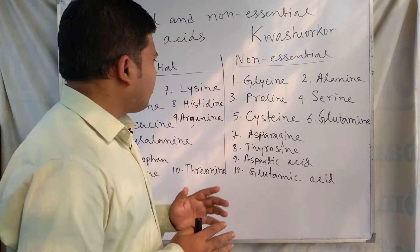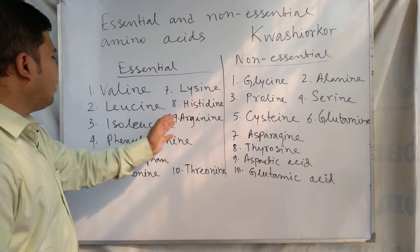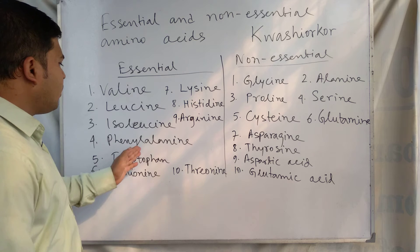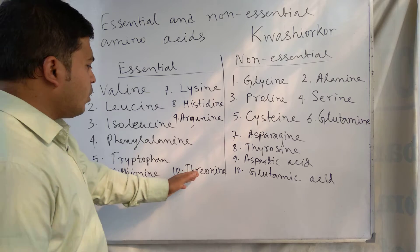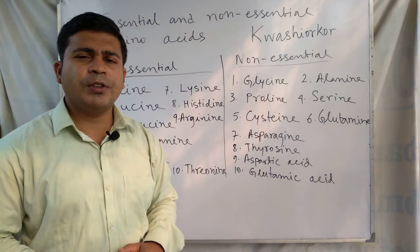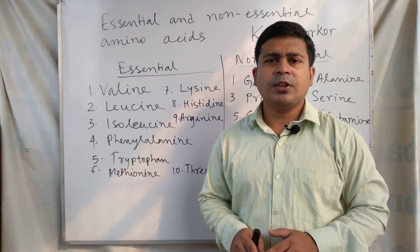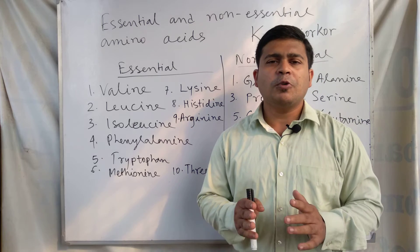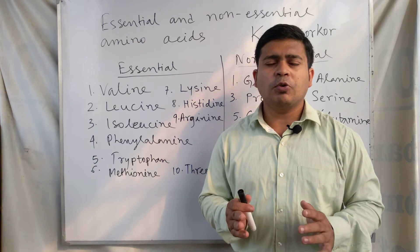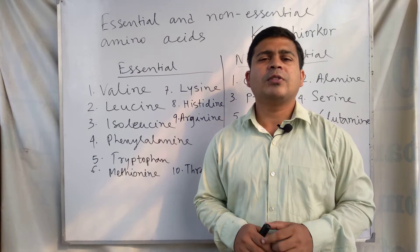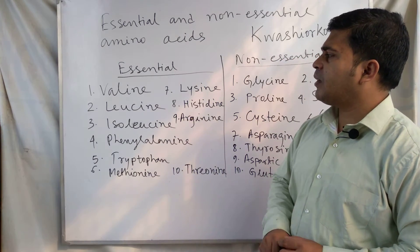Examples of essential amino acids are: valine, lysine, leucine, histidine, isoleucine, arginine, phenylalanine, tryptophan, methionine, and threonine. These are the 10 essential amino acids — 10 out of the 20 amino acids found in protein molecules. These 10 amino acids are classified as essential amino acids.